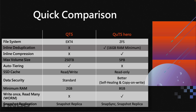SSD cache is available on both. With QTS it's a more traditional read and write setup, accelerating data both ways. With QUTS Hero it's read-only — it does have a small write element with the ZIL (ZFS Intent Log), but ultimately it's just a read-only cache. On data security, QTS has really good data security, but it is better on QUTS Hero. ZFS brings a self-healing file system as well as copy-on-write — more on that in a few slides.